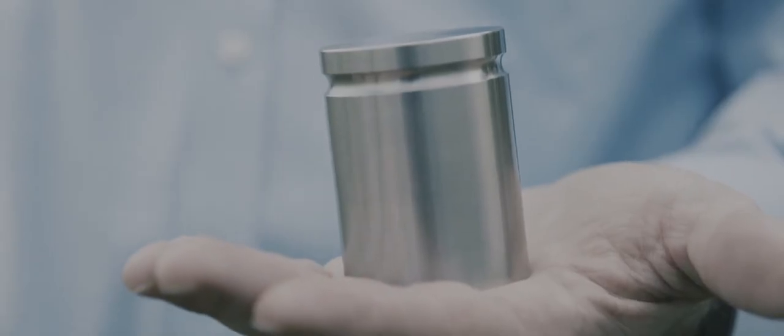The kilogram was originally defined as the mass of one liter of water at four degrees Celsius, the point at which water is the most dense. It was replaced by a platinum cylinder artifact in the late 18th century.